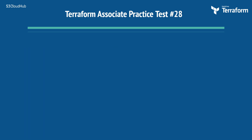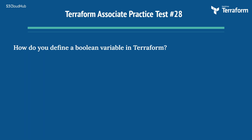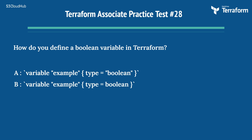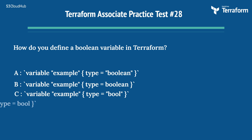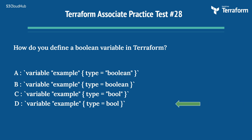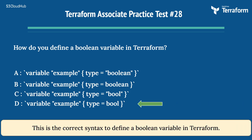The twenty-eighth question is: how do you define a boolean variable in Terraform? Options A through D all present variations of variable example { type = bool }. The right answer is Option D: variable example { type = bool }. This is the correct syntax to define a boolean variable in Terraform.